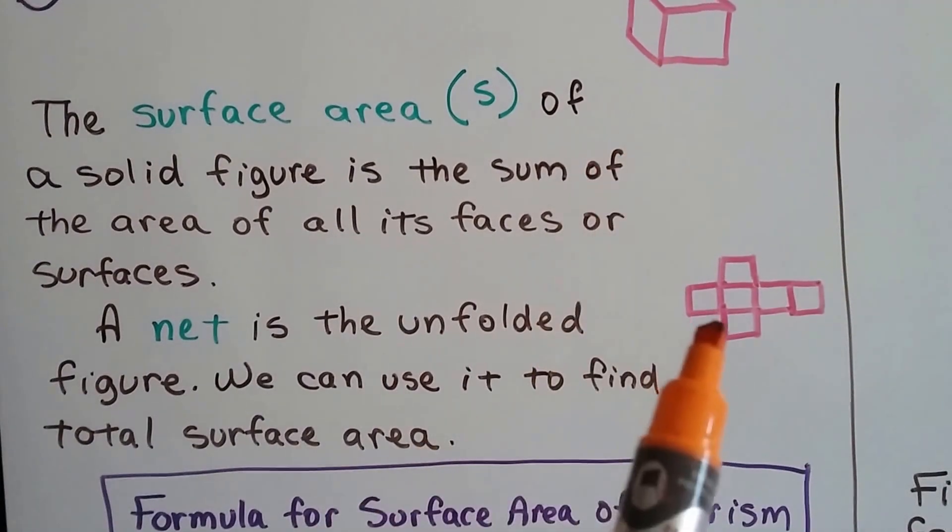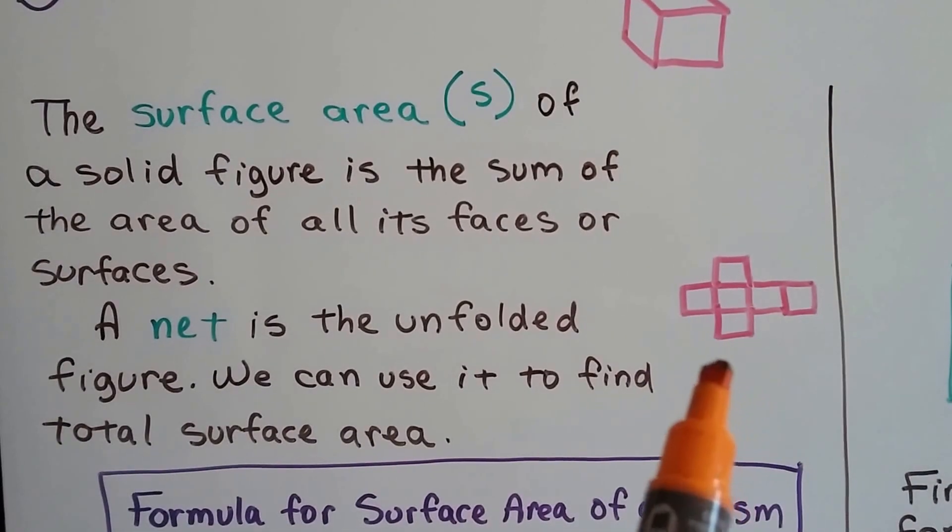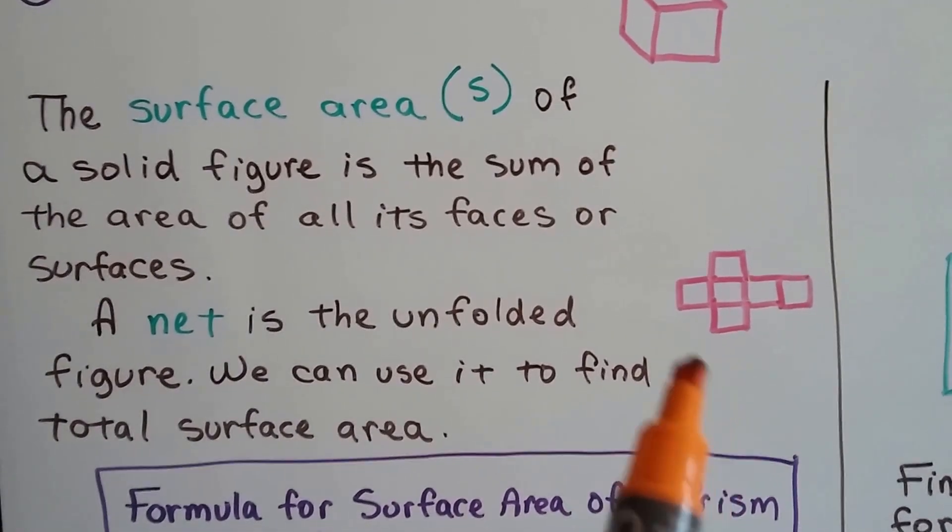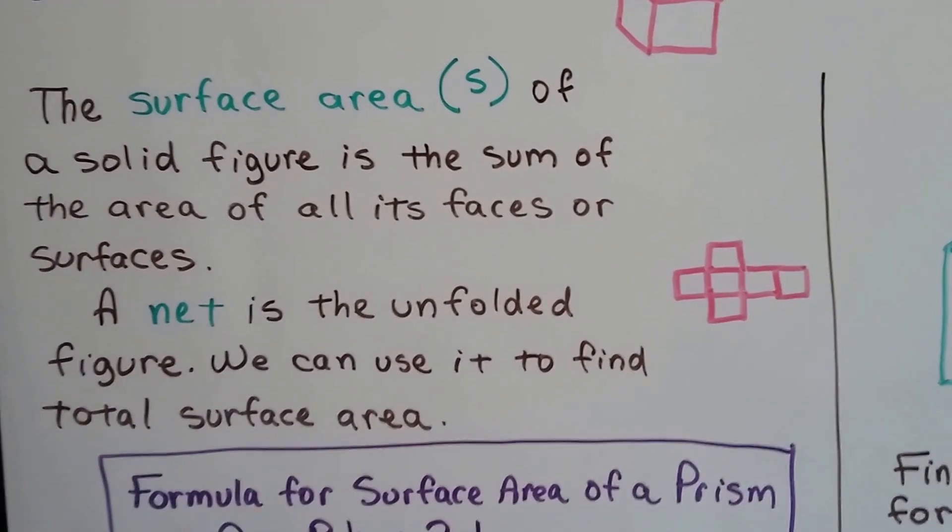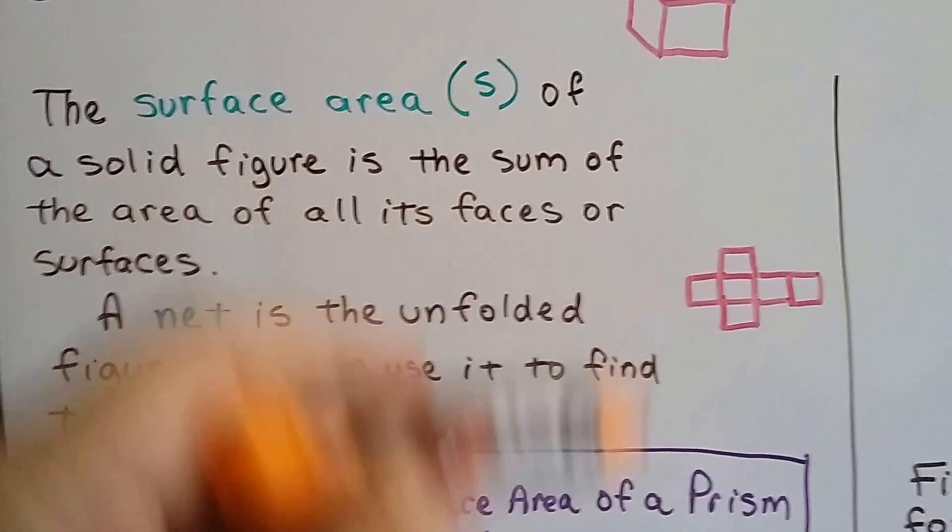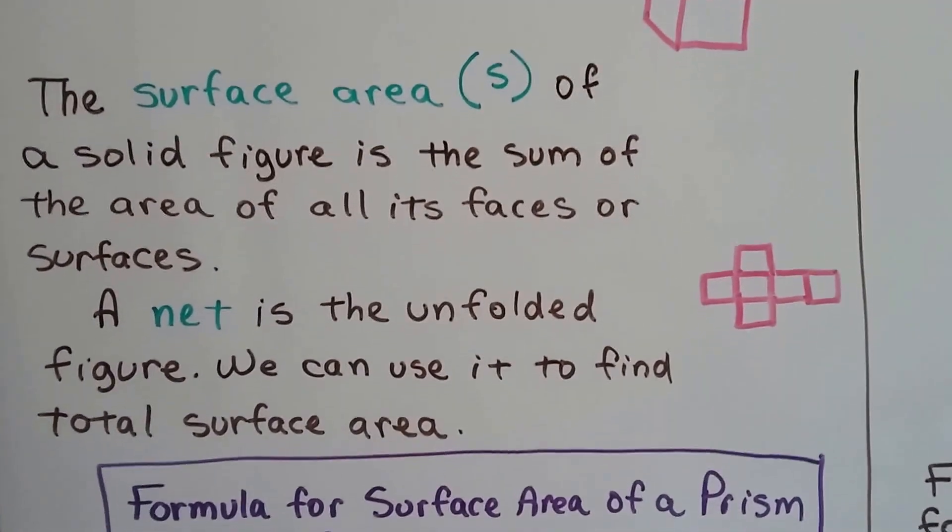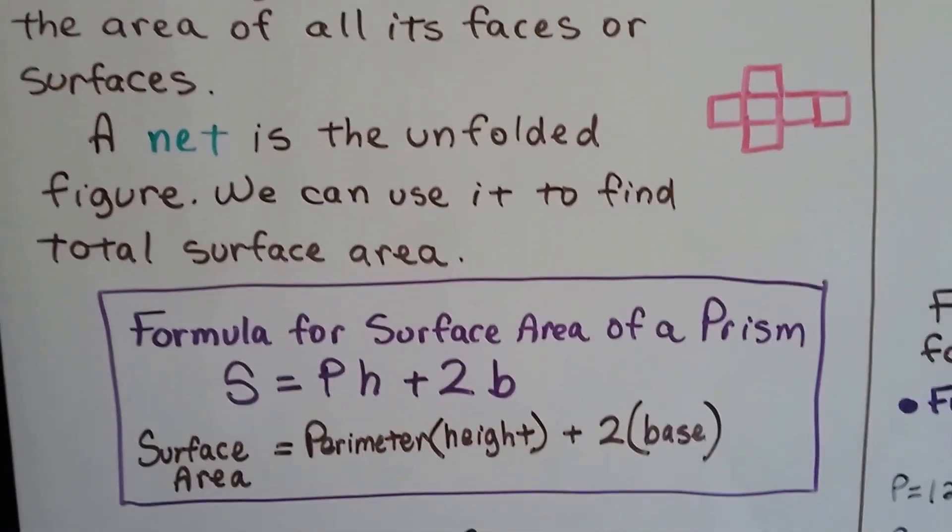Just for one cube, there's 11 different combinations of nets. This square could be off on the side. This is just one way that a net could look if it was opened up, unfolded.